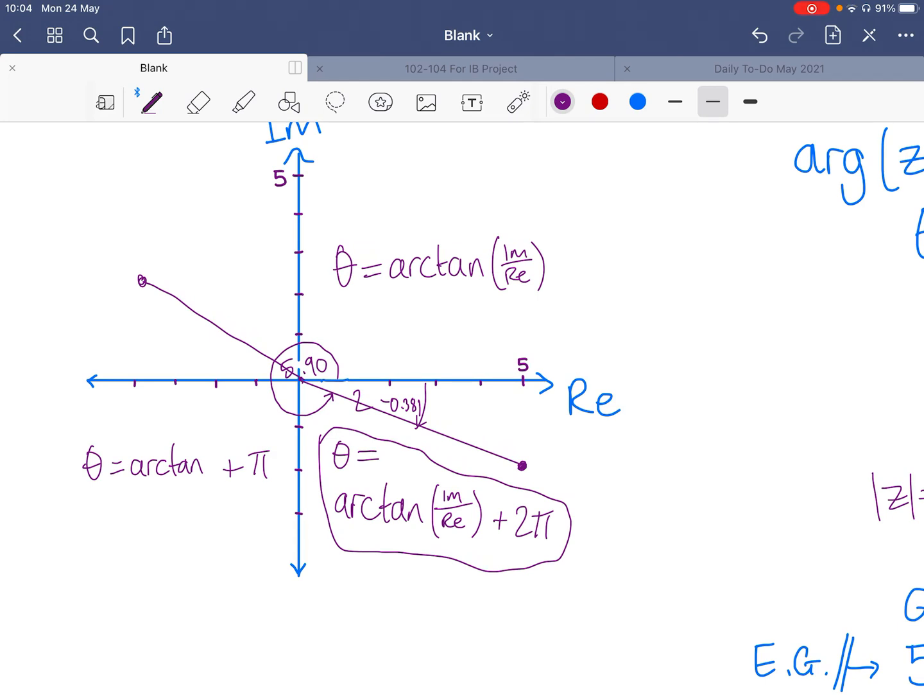And, well, we already saw what your calculator assumed this would be. It assumed this would be the negative version here. So to get from this fourth quadrant that your calculator thinks you're in, to the second one, we are going to add π here as well.